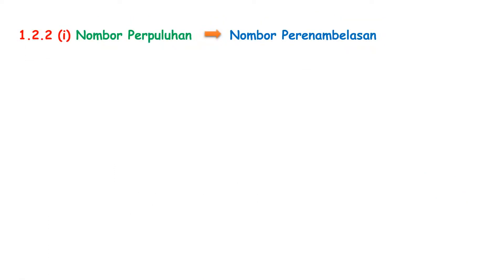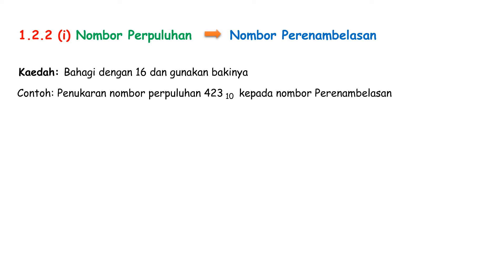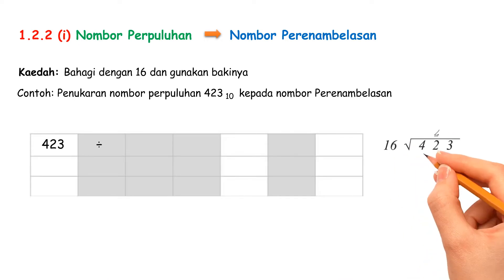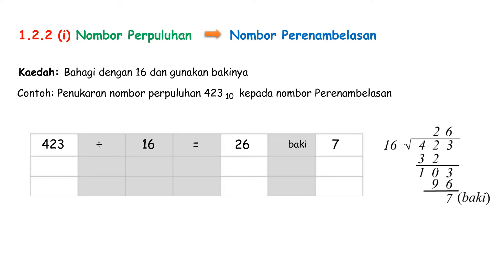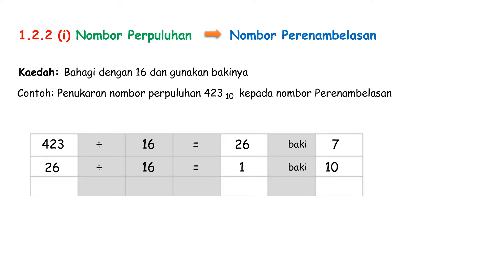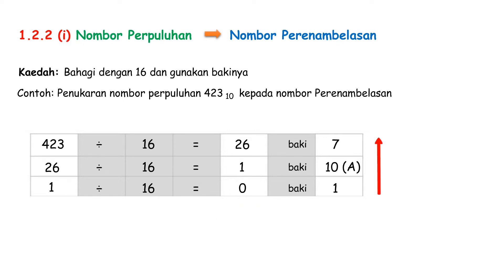Conversion of Nombor Perpuluhan to Nombor Perenamblasan. Let us look at an example using the method kaedah bahagi dengan 16 dan gunakan bakinya. Convert the Nombor Perpuluhan 423 to Nombor Perenamblasan. 423 divided by 16 equals to 26 with the remainder 7. Use the value 26 and divide it by 16 again, will get 1 with the remainder 10. In Nombor Perenamblasan, 10 is A. Repeat the step until you get 0 in the end. Now, we can get the Nombor Perenamblasan by reading the Nombor from bottom to top. Therefore, the Nombor Perpuluhan 423 is equal to 1A7 in Nombor Perenamblasan.